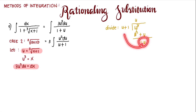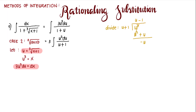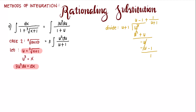We divide again: negative u divided by u is minus 1. Multiply: minus 1 times u is negative u, and minus 1 times positive 1 is negative 1. So u squared over u plus 1 equals u minus 1 plus 1 over u plus 1.